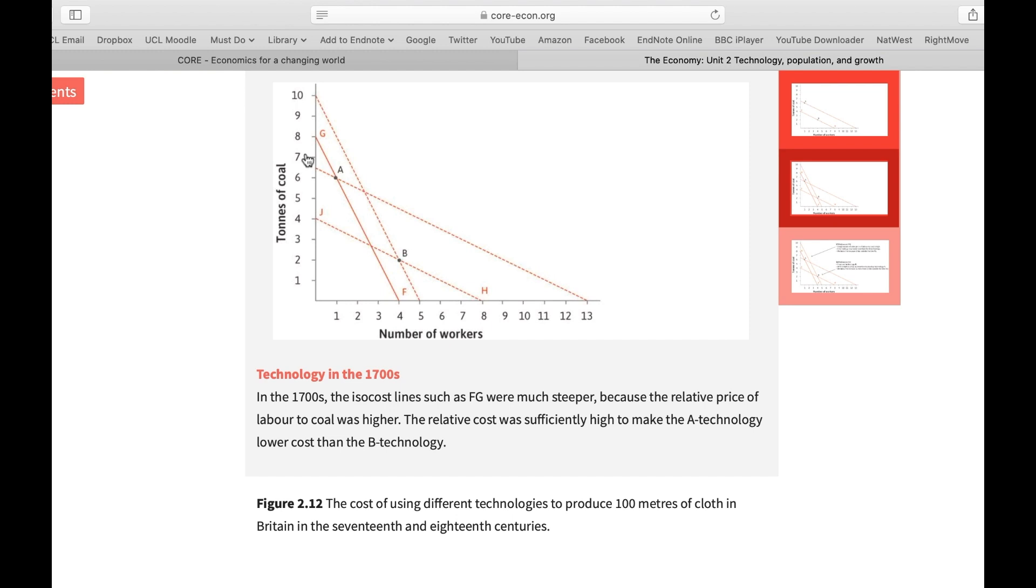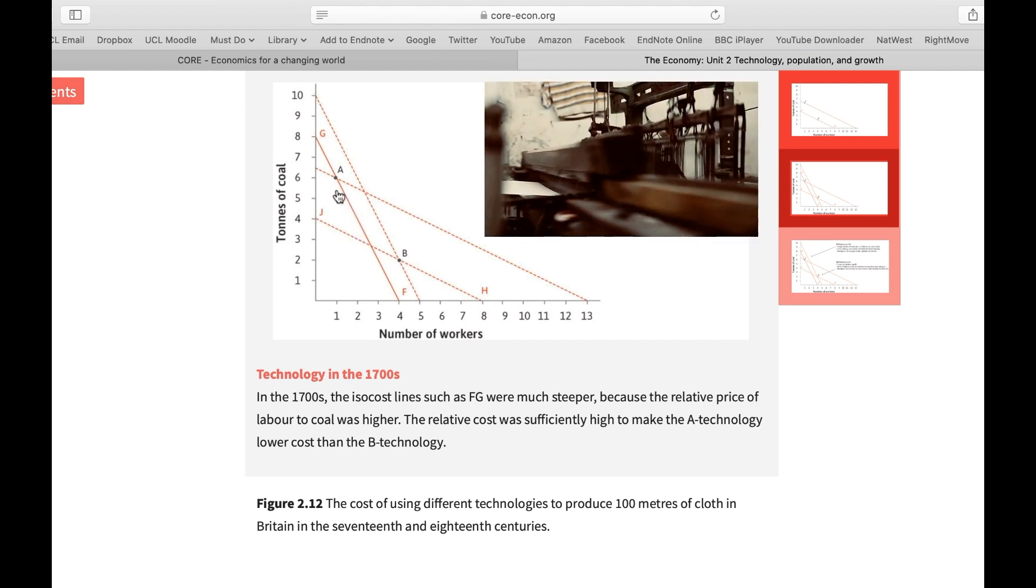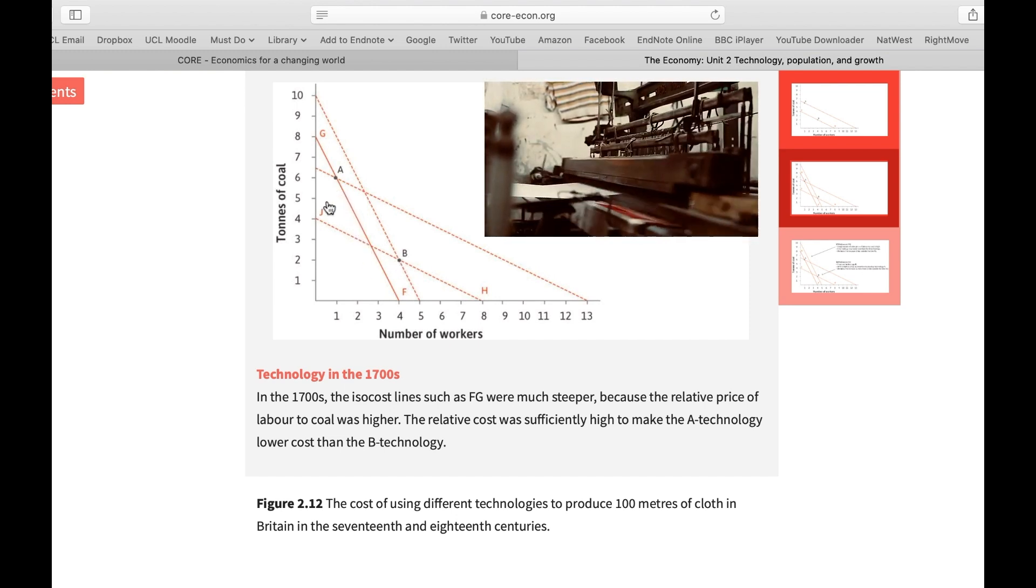Now, in this new world, Britain had an incentive to replace labor, had an incentive to automate. Why? Because the cost of labor was increasing. Therefore, it had an incentive to move away from this labor-intensive technology towards a more energy-intensive one.